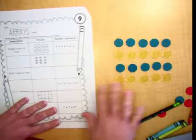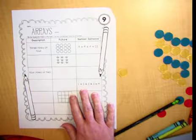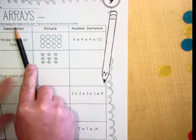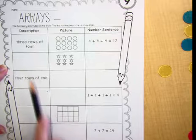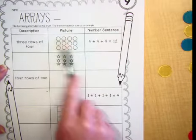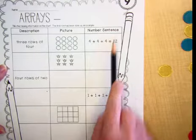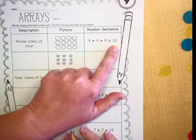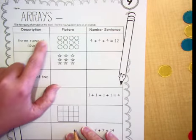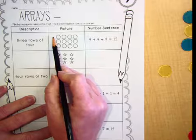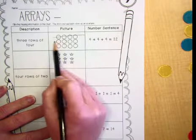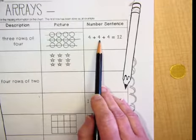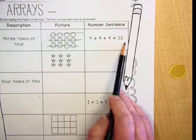And then on the other side, you have to do a little bit of work here. Remember, there is a column for the description that tells you how many rows and in each row. There's a column for the picture. And there's a column for the number sentence or the equation. Okay. So like the first one, they did it for you. They said 3 rows of 4. And then look, they drew you a picture of 3 rows of 4. And then they wrote the number sentence. 4 plus 4 plus 4. And that equals 12.